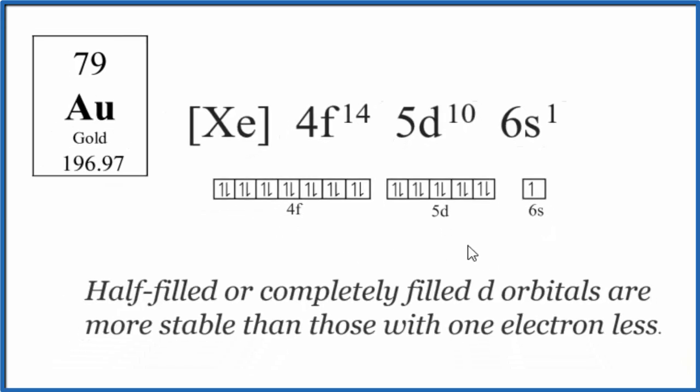Again, we're thinking about this from the perspective that d orbitals are more stable when they're completely full or half full, just one electron in each one of these here. This is Dr. B with the electron configuration for gold. Thanks for watching.